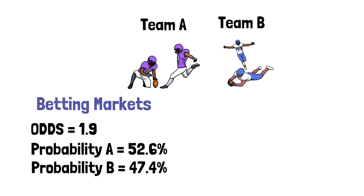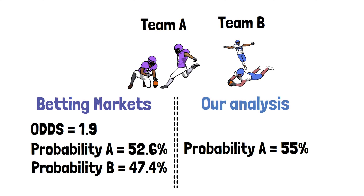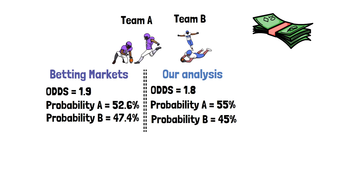That implies a probability of 52.6% that Team A wins, which leaves Team B with a 47.4% probability of winning. Now this is where it gets interesting for people into statistics — we can complete our own analysis on this sporting event. Through some sort of computer simulation or AI machine learning model, we can come up with our own odds. We might find that Team A has a more realistic probability of winning of 55%, which working backwards would reflect odds of $1.80, leaving Team B with a 45% chance of winning.